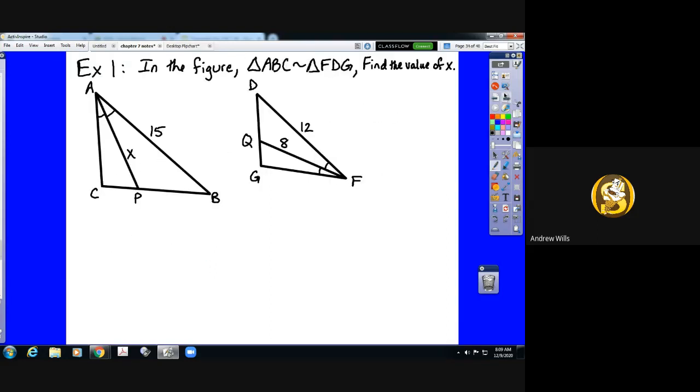Okay, so here in example one, the big key here is we've got to recognize that in this figure we have that triangle ABC is similar to triangle FDG. We're asked to find the value of X. Notice that they have given us, based on our similarity statement, a set of proportional sides. AB corresponds to FD. We've got that AB and FD are one of our three sets of sides in our proportion. This tells us that this is true. All three of those ratios are equal.